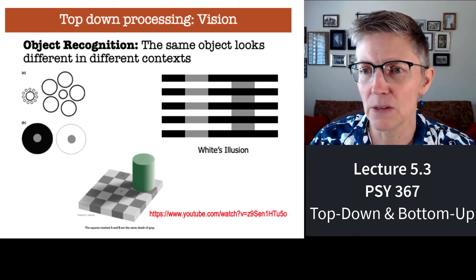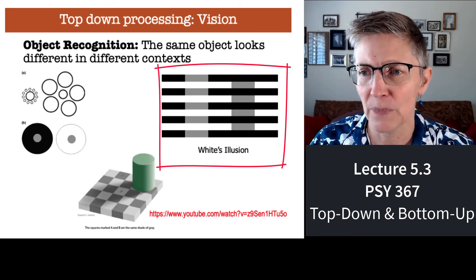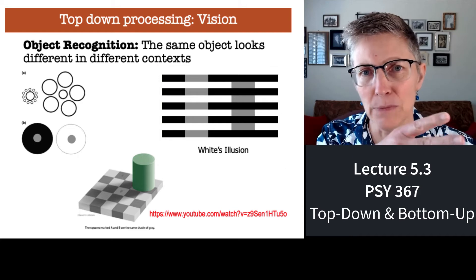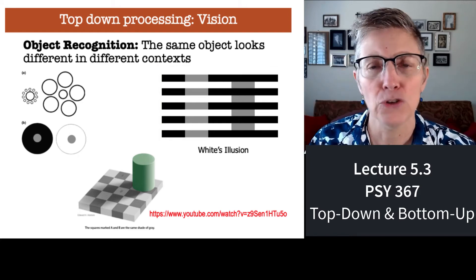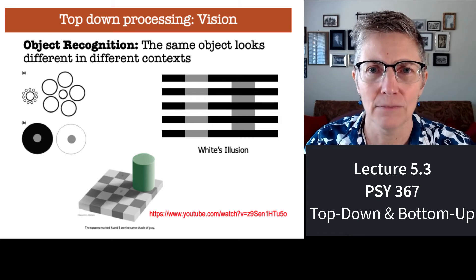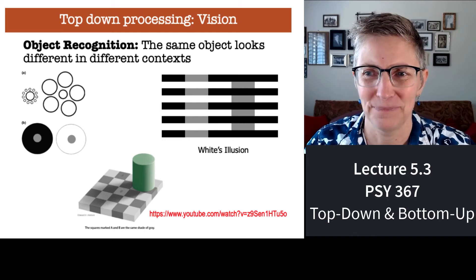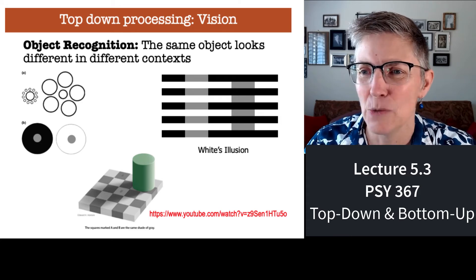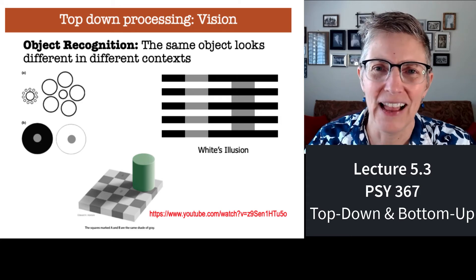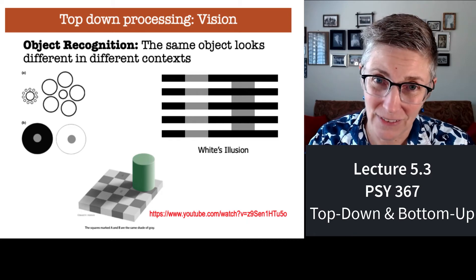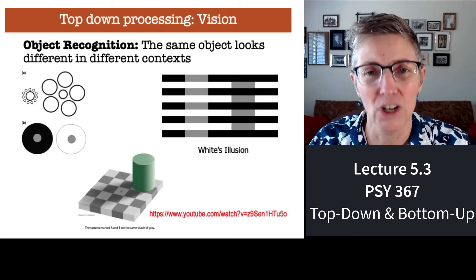Here's something similar called White's Illusion. You can see horizontal black and white stripes with some vertical bars. Do those vertical bars look like they are the same shade of gray? No — but they are exactly the same color. The perception of each one depends on whether that bar appears to be part of a darker figure or a lighter figure.